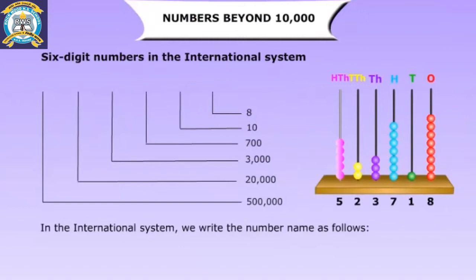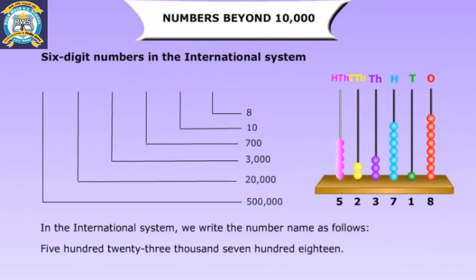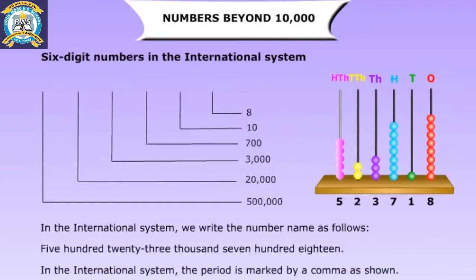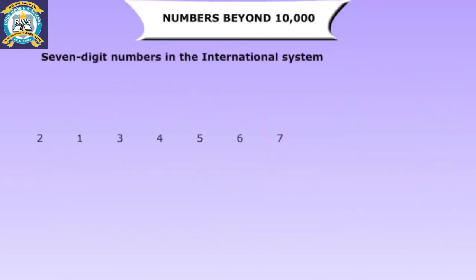In the international system, we write the number name as follows: five hundred twenty-three thousand, seven hundred eighteen. In the international system, the period is marked by a comma as shown. Next, we look at seven-digit numbers in the international system.